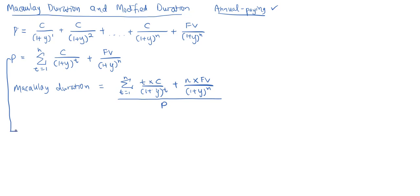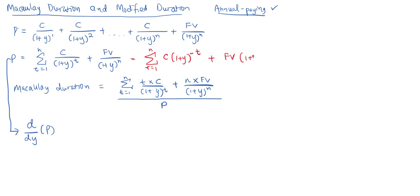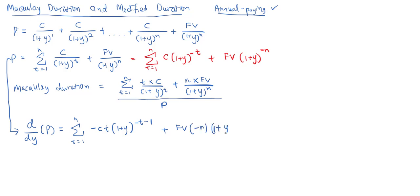Now, continuing from the price formula, we apply differentiation to find the first derivative of price with respect to yield to maturity. First, we express the price with negative exponents: sigma from T equals 1, C times (1+Y) to the power of negative T, plus the face value times (1+Y) to the power of negative N. Applying differentiation, we get: sigma from T equals 1 of negative C times T times (1+Y) to the power of negative T minus 1, plus the face value times negative N times (1+Y) to the power of negative N minus 1.